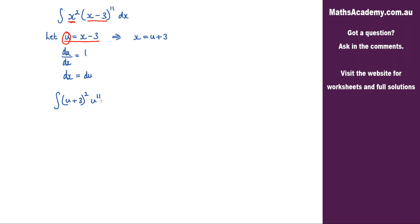So u to the power of 11, and the dx is now du, so that's with respect to u. We can now go ahead and expand this. So expanding this bracket here would give us u squared plus 6u plus 9, all multiplied by u to the power of 11 with respect to u.